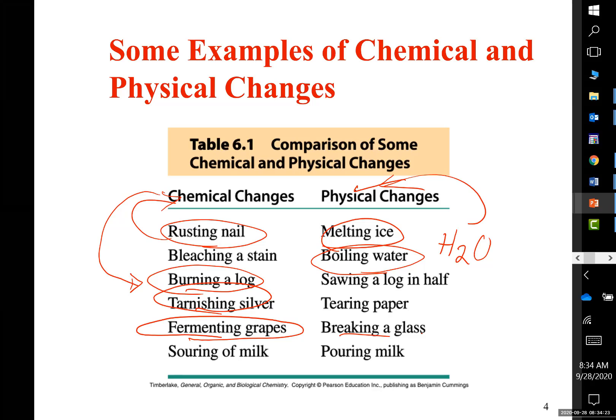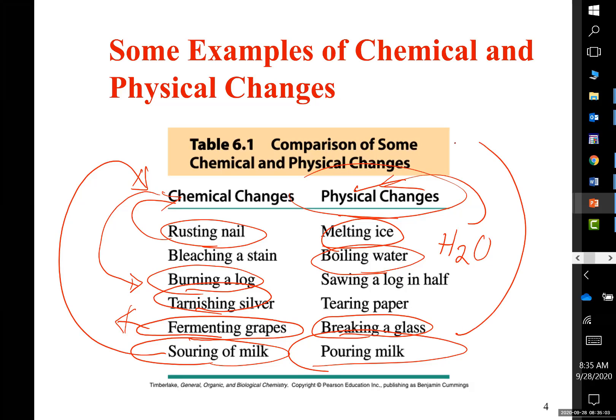Breaking glass - no change of the formula. You can get the glass, you can melt it, get back your glass. So that's a physical change. But fermentation of grapes, you get alcohol, you get change of formula. Grape and alcohol do not have same property. Souring of milk is total change of the structure of milk. But pouring milk into a cup, that's no change of nature. It's just change of appearance, so that's a physical change.